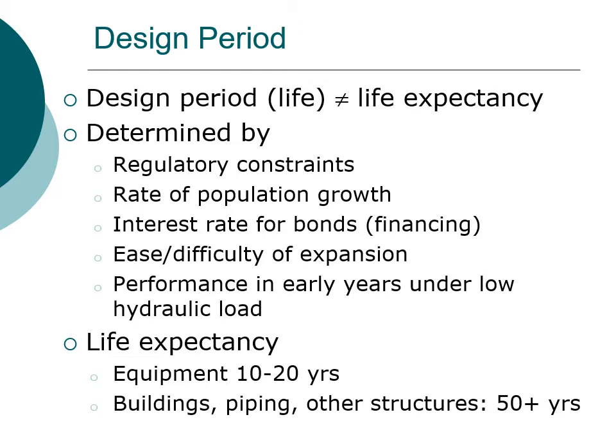Life expectancy pertains to equipment, buildings, and piping. Typically with equipment you're looking at 10 to 20 years. With buildings you're looking at more than 50 years. Piping networks can be 100 years — much of the piping network for water distribution systems was laid back in the 1920s, 1930s, and 1940s, and that piping network is still operational.